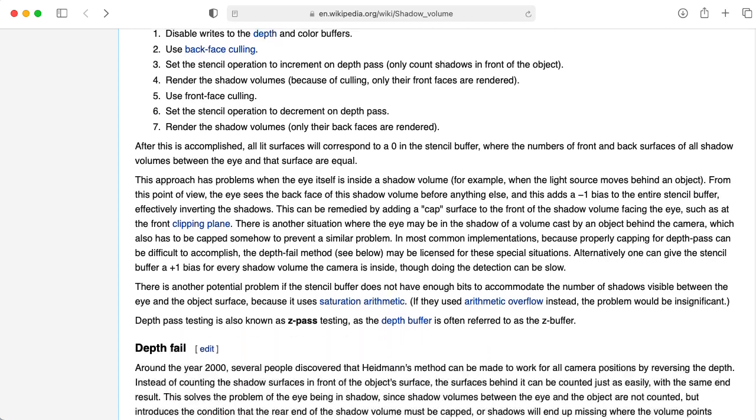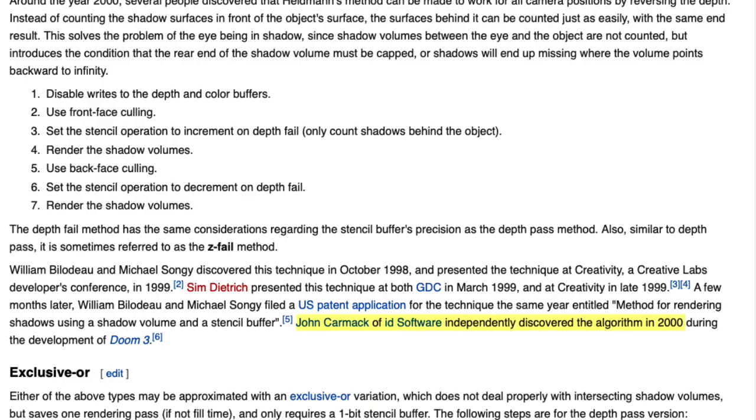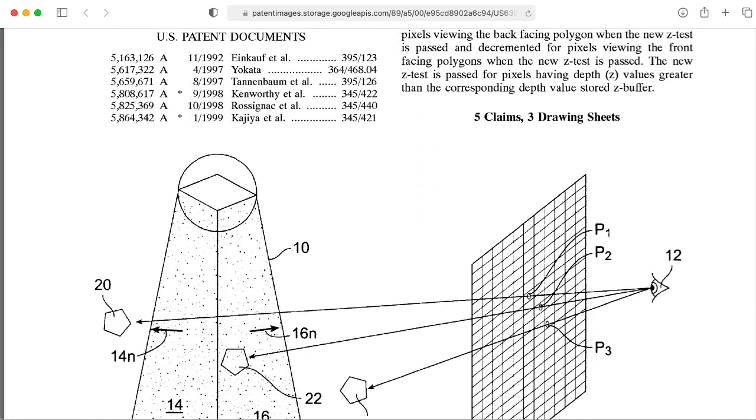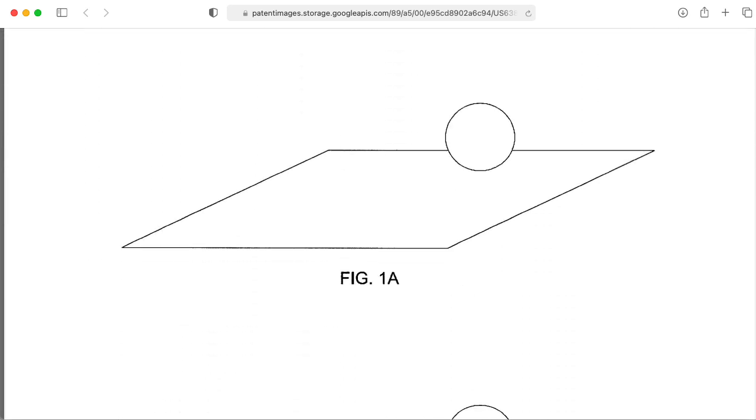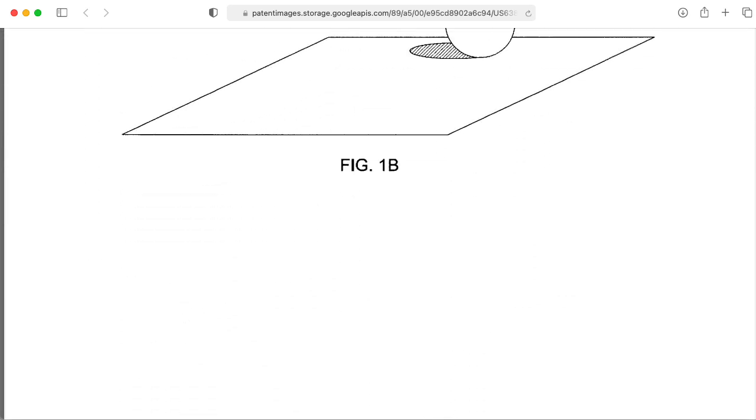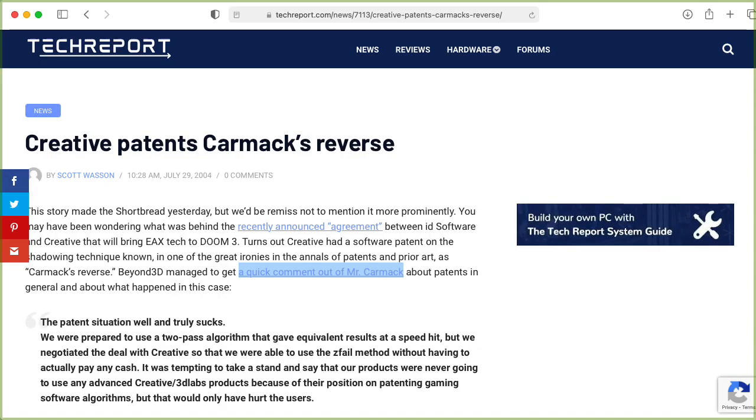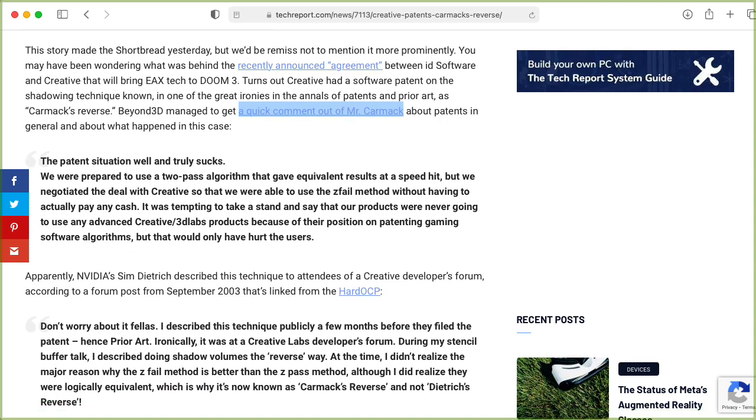There's a particular implementation called the depth fail algorithm that's also known as the Carmack reverse. Some folks at Creative Labs independently discovered the algorithm and were able to get a patent on it. And I think the fact that they were able to patent this algorithm shows how utterly broken the US patent system is. This led to all kinds of absurdity, and you can read about the absurdity elsewhere.